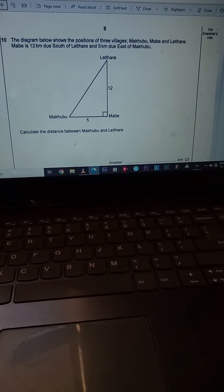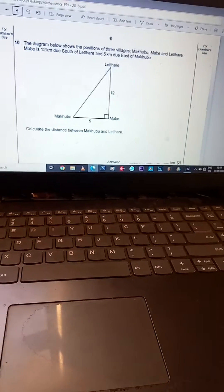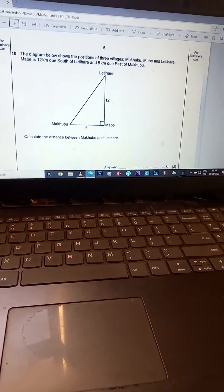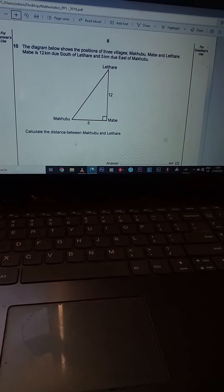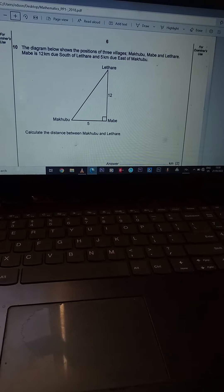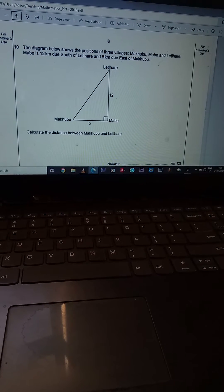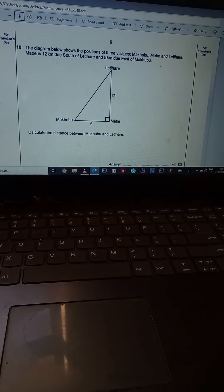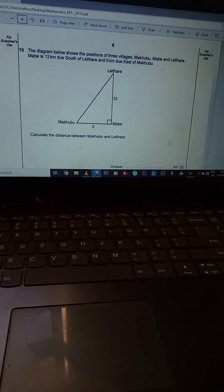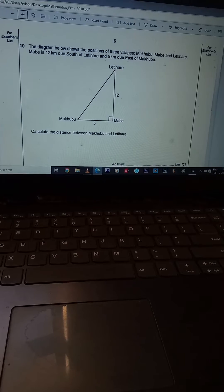The question is: the diagram below shows positions of three villages, Makubu, Mabe, and Little Haru. Mabe is 12 kilometers to the south of Little Haru and 5 kilometers to the east of Makubu. Calculate the distance between Makubu and Little Haru.